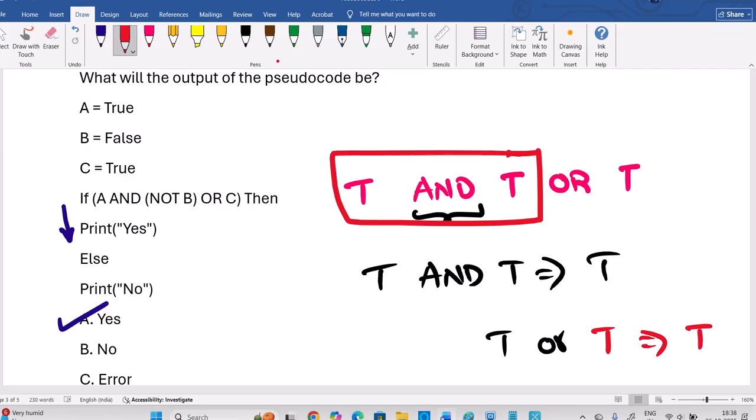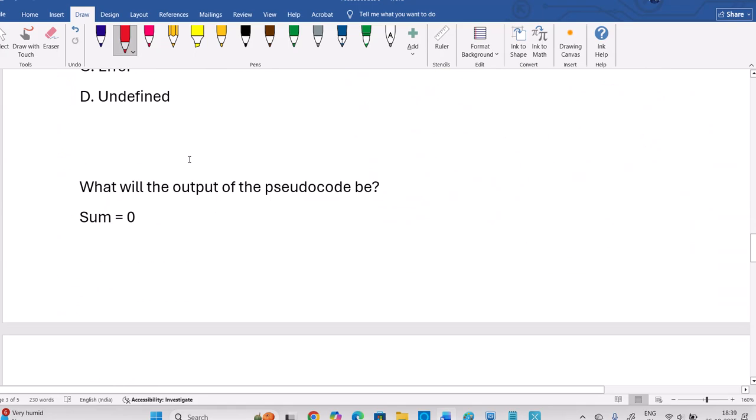Right? Then we are left with this resultant. Resultant of this true and true is true. Then true or true is nothing but true only. So this event is true, we have to enter. If we have to enter, true means we can enter. So we can print yes.